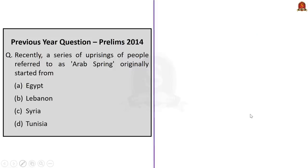Previous year question: A series of uprisings referred to as Arab Spring originally started from which country? Option A — Egypt, Option B — Lebanon, Option C — Syria, Option D — Tunisia. The correct answer is option D, Tunisia.